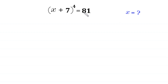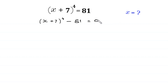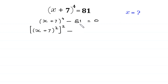Let's start by moving this 81 to the left side. So x plus 7, whole to the power 4, minus 81 is equal to 0. Now this x plus 7 whole to the power 4 can be written as x plus 7 whole squared, and whole to the power 2, minus 81 written as 9 squared, is equal to 0.